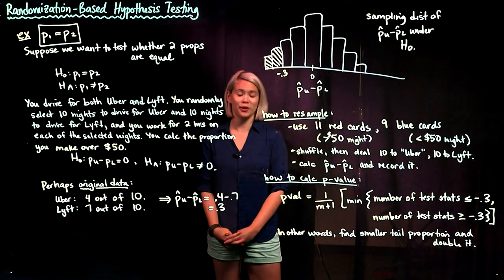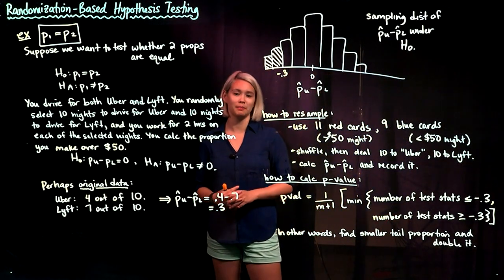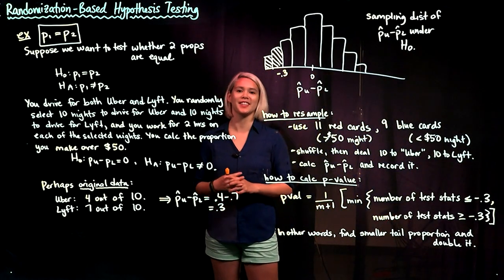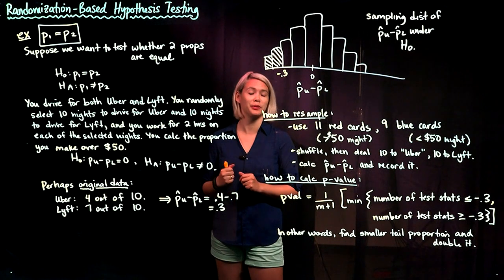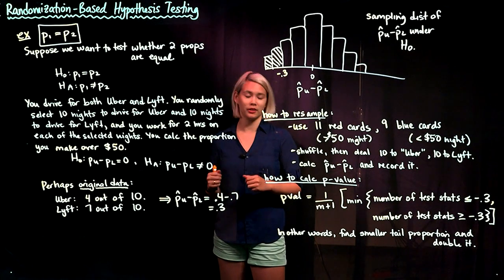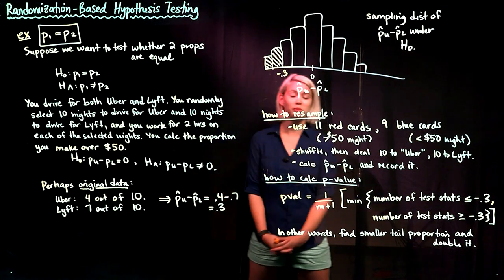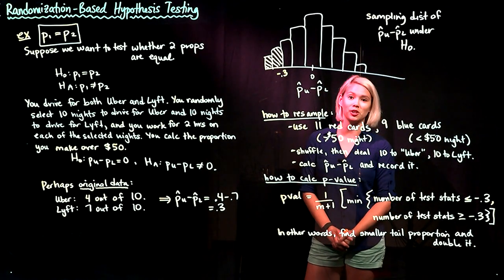In the last video, you were introduced to randomization-based hypothesis testing, and now we're going to do another example of it. In this example, rather than talking about two means, we're going to talk about two proportions.